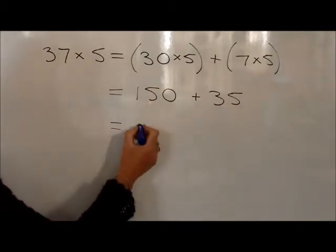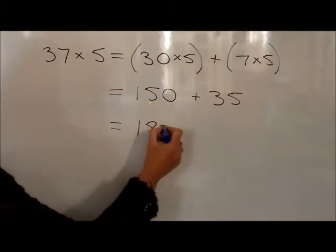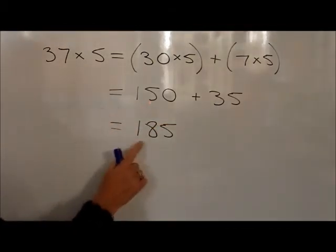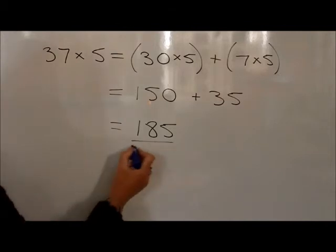another 5 is 185. So that 37 times 5 is equal to 185.